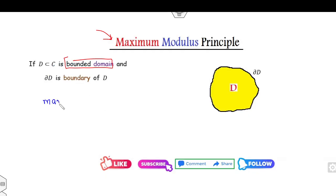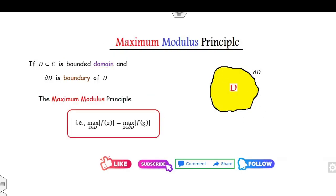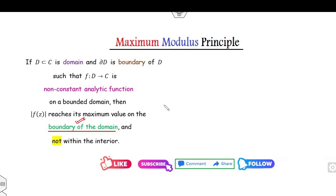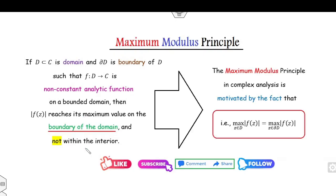A very beautiful property of the Maximum Modulus Principle is: whenever you want to find the maximum value of |f(z)| over the complete domain D, you only need to check those points which are on the boundary of the closed curve. There is no need to check at interior points — the maximum always occurs on the boundary. Similarly, the Minimum Modulus Principle states that the minimum value also occurs only on the boundary. But the function f(z) must be a non-constant analytic function.